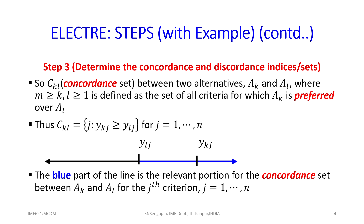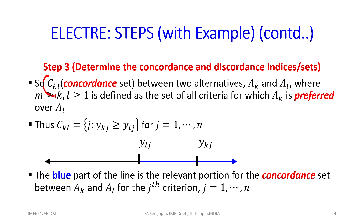We were considering different concepts of indices for the sets. The concordance set between two alternatives involves only comparison of alternatives, not of criteria. Do not confuse the value of C-K-L, which is the concordance index, not criteria. Similarly, the discordance concept will be discussed and given the symbol of capital D.